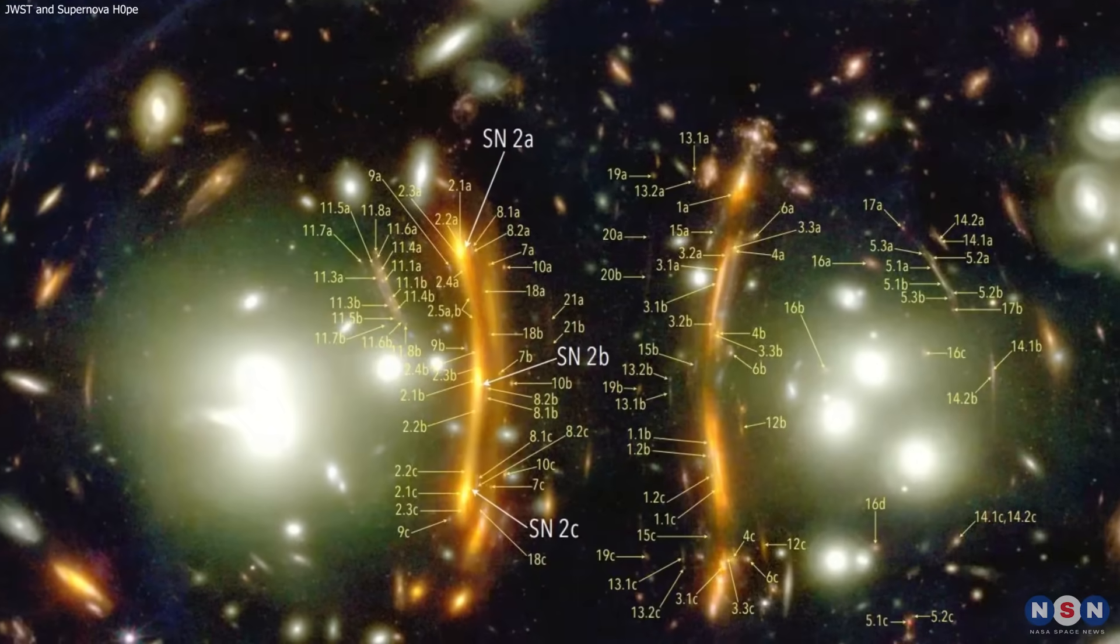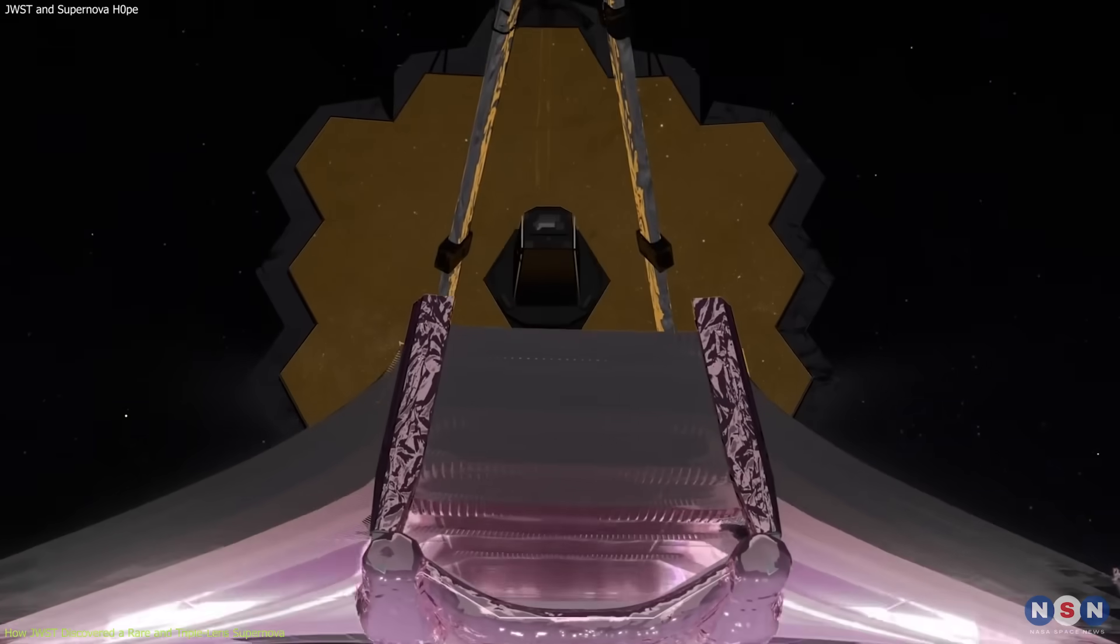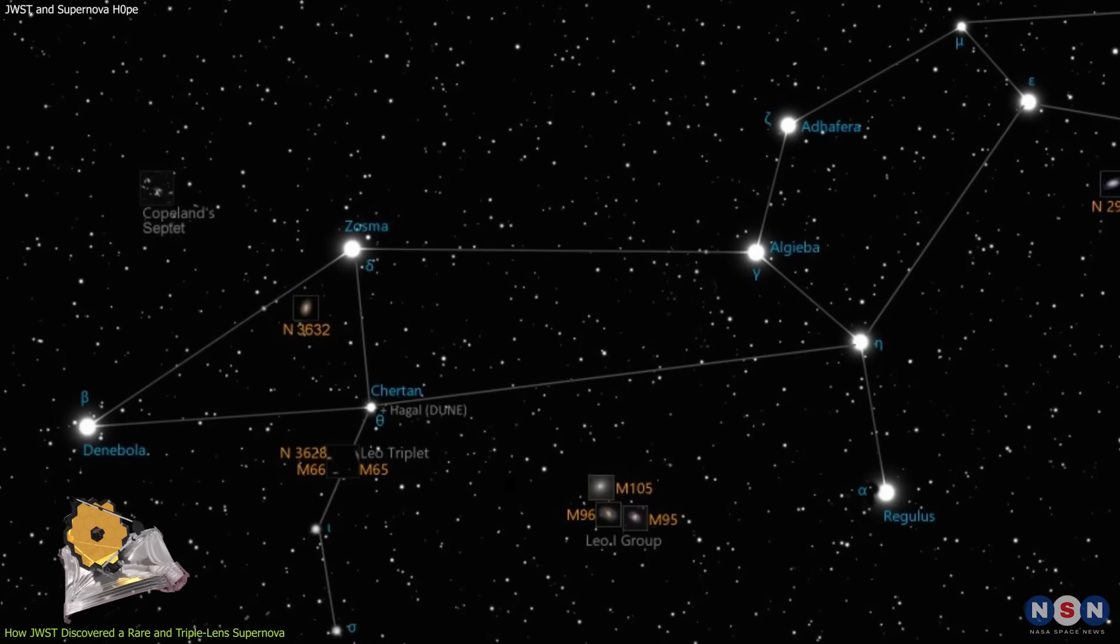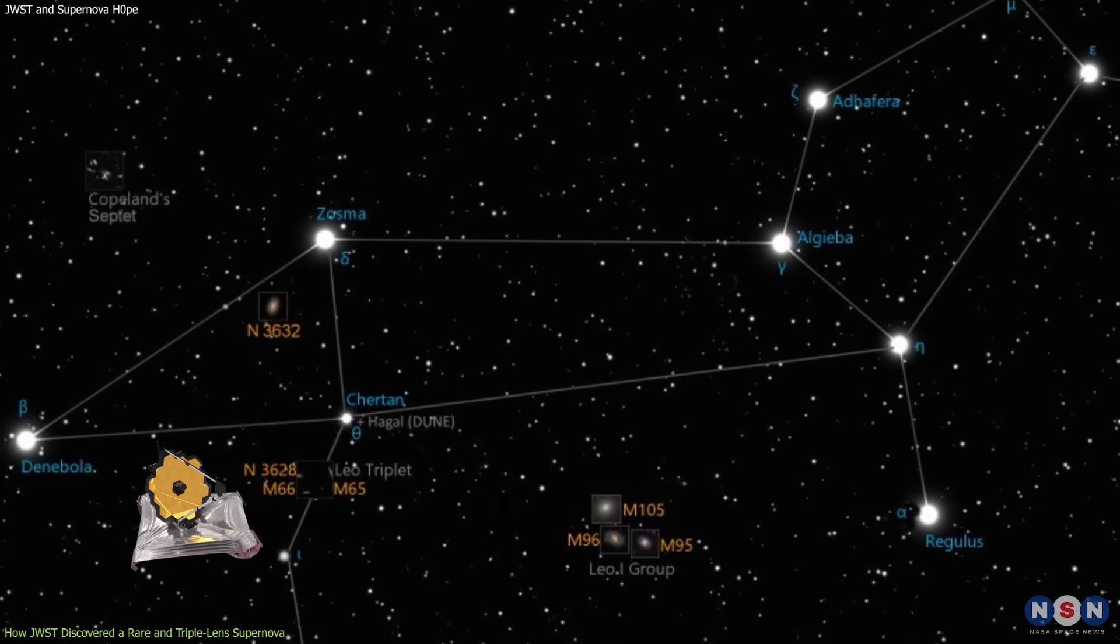Let's start with the discovery itself. When did it happen, and how did James Webb observe it? Well, it happened on January 12, 2023, when James Webb was pointing at a patch of sky in the constellation of Leo.